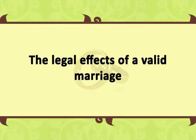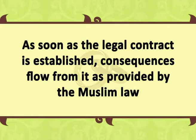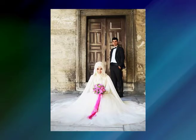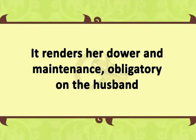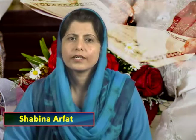The legal effects of a valid marriage: as soon as the legal contract is established, consequences flow from it as provided by Muslim law. It legalizes the enjoyment of either of the spouses with the other in the manner permitted by the law. It also subjects the wife to the power of restraint of the husband, while she becomes entitled to certain rights and privileges. It renders her dower and maintenance obligatory on the husband. A valid marriage establishes on both sides the prohibitions of affinity, the rights of inheritance, and the obligation of justness between the wives. On the wife it imposes submission to the husband and confers on the husband the power of correction when she is disobedient. It renders unlawful the conjunction of two sisters and those who fall under the same category.